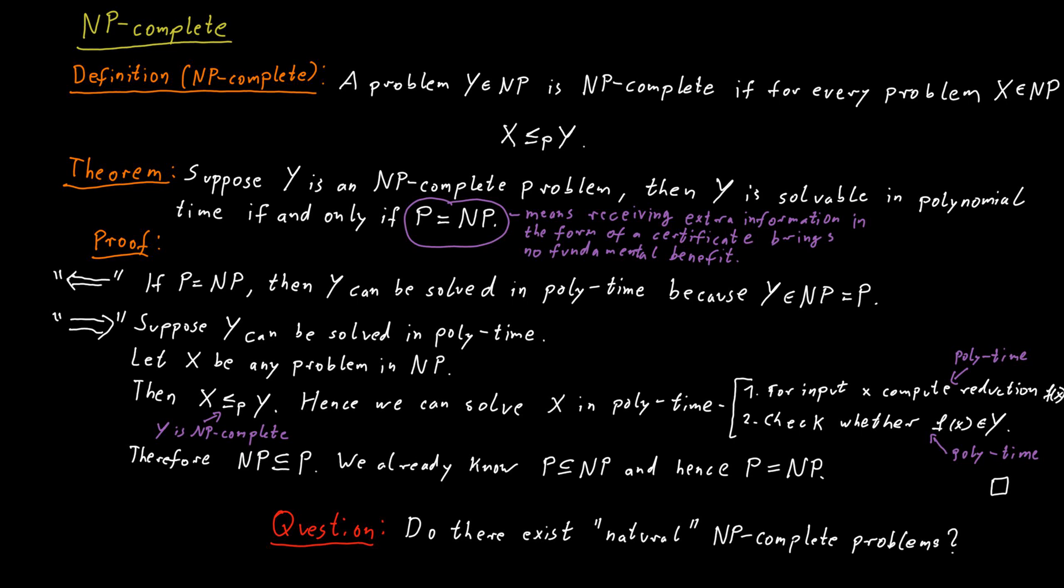Instead, what we will ask is a slightly more complicated question, which is, do there exist natural NP-complete problems? And the word natural is not really a formal description. It just has an intuitive meaning. It's asking whether there exists a problem that maybe we would actually want to solve, something that doesn't seem overly artificially constructed, that is NP-complete.